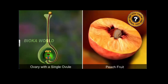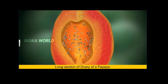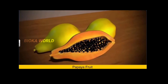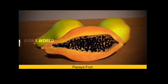Did you know that different flowers of different plant species have a varying number of ovules in their ovaries? A peach, for instance, develops from an ovary containing a solitary ovule. A papaya, on the other hand, has several ovules in its ovary, and that's why you see numerous seeds in the fruit when it is split open.